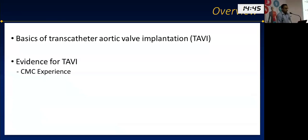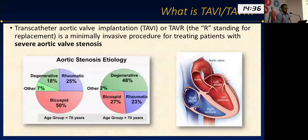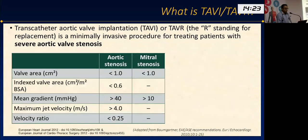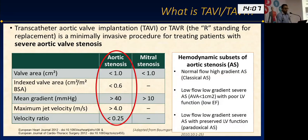My aim for today's talk is to give you a flavor of what a TAVI procedure is and our experience with TAVI at CMC. TAVI is essentially a catheter-based treatment for severe aortic stenosis, mostly done in elderly patients where the common cause of stenosis is age-related degeneration. The definition of aortic stenosis severity is by echocardiography: the criteria for significance is a valve area less than 1 cm² and a mean gradient more than 40 mmHg.